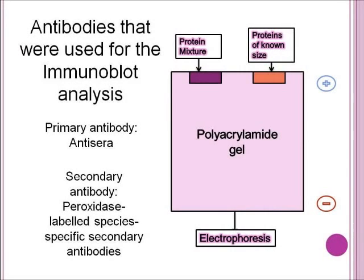Antibodies used for the immunoblot analysis: this diagram shows a classic example of an immunoblot analysis setup. In this research study the researchers used two antibodies. The first was a primary antibody called antisera. The second was a secondary antibody called peroxidase-labeled species-specific secondary antibodies.